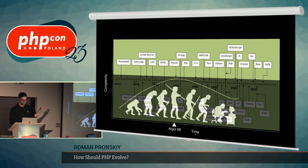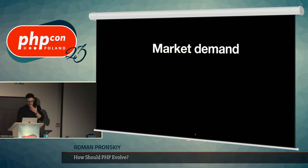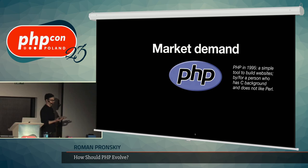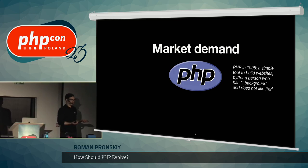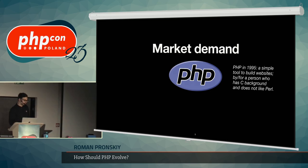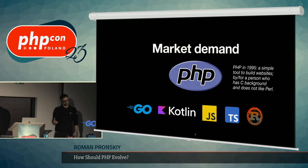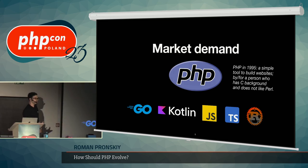Besides hardware, the reason for this change is market demand. Market demands different things from languages. If you think about PHP in 1995, it was a tool for a C developer who didn't want to write web with C — he wrote PHP for himself, and everyone needed it, so it exploded. But currently the market demand has changed. We have many competitors which are really good, with really nice features. If you want PHP to still be interesting to developers, the industry, and businesses, we need to think about what features to add and what not to add.